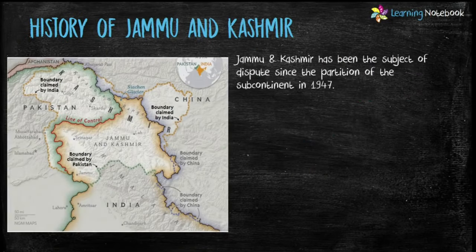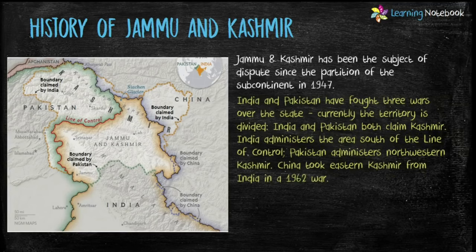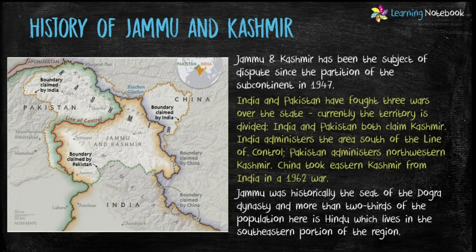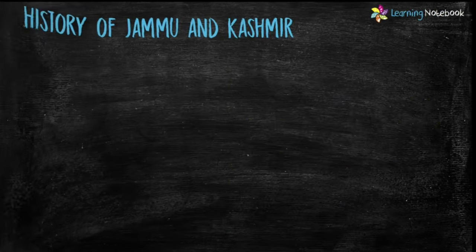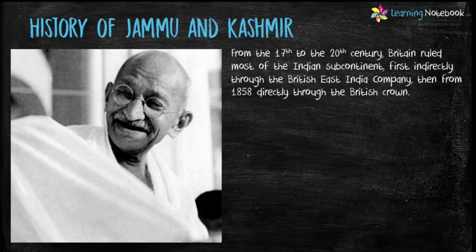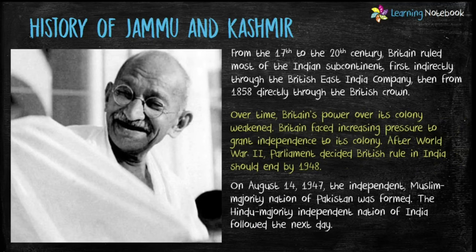Jammu and Kashmir has been the subject of dispute since the partition of the subcontinent in 1947. India administers the area south of the Line of Control, Pakistan administers north-western Kashmir, and China took eastern Kashmir from India in the 1962 war. From the 17th to 20th century, Britain ruled most of the Indian subcontinent, but after World War II, Britain's power over India weakened. On August 14, 1947, Pakistan was formed, and India followed the next day.